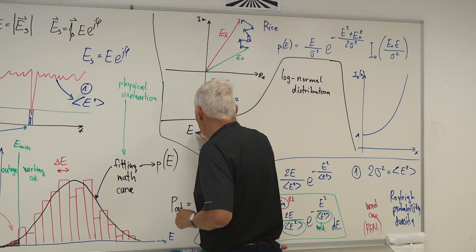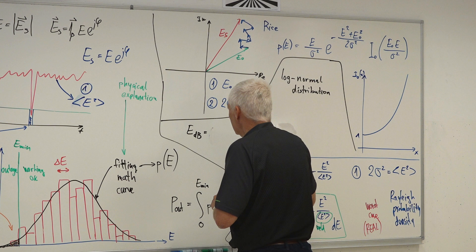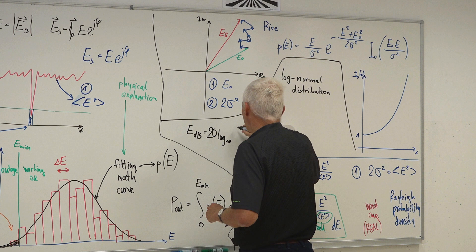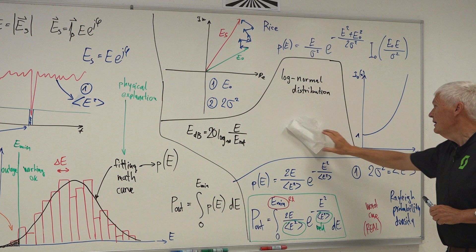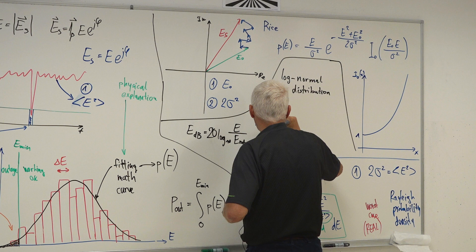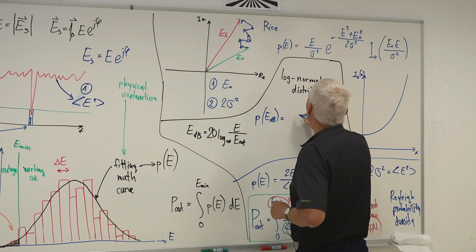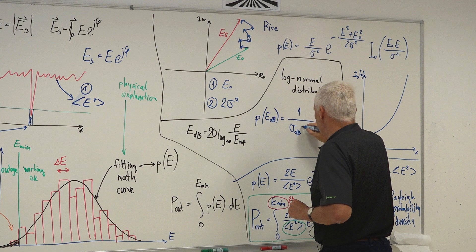For the log-normal distribution we talk about the electric field expressed in dB: E_dB = 20 × log₁₀(E / E_reference). The log-normal distribution — how does it look? I have now the probability density of the electric field expressed in logarithmic units in dB.